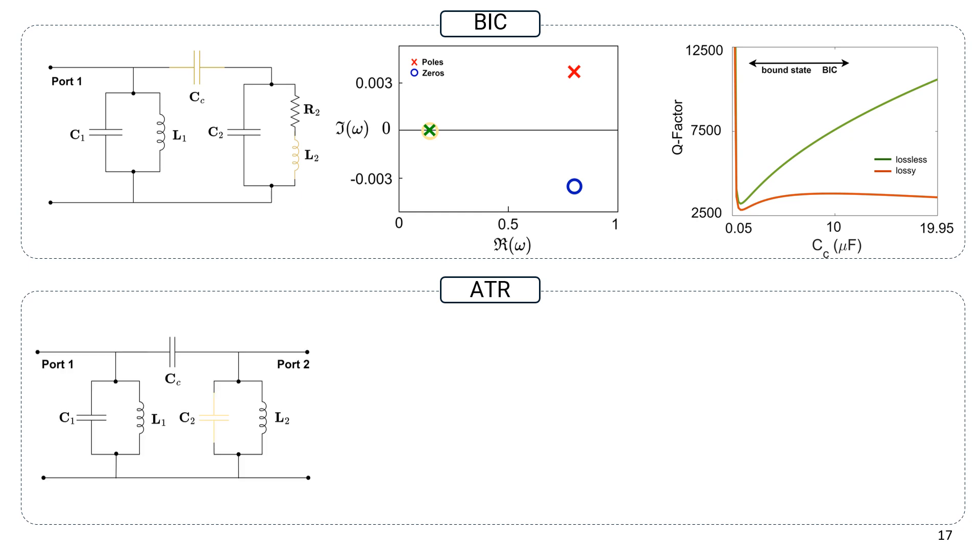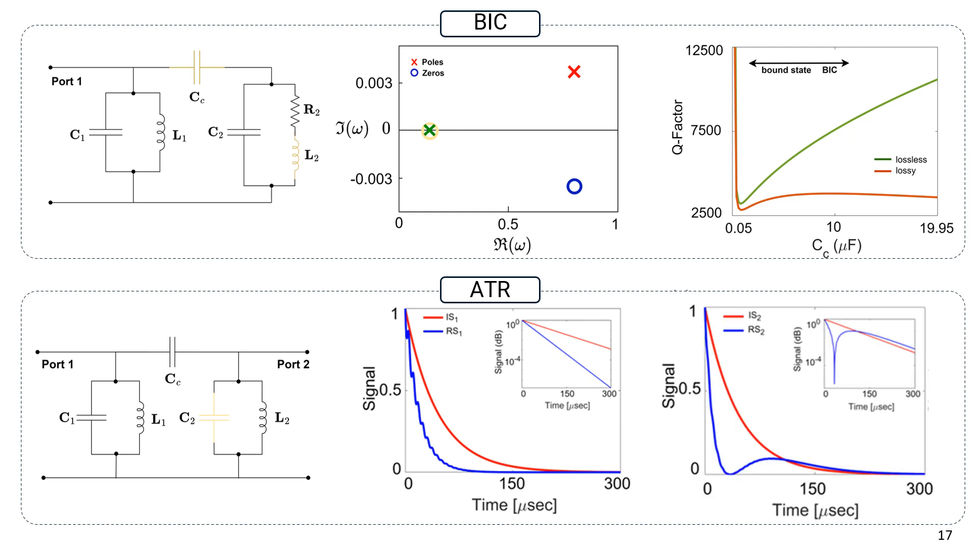Another example is an anisotropic transmission resonance, or ATR effect. In a two-port circuit with two resonators coupled by a capacitor, this effect occurs at the transition between weak and strong coupling. When exciting the system from port 1, the reflected signal diminishes significantly after the transient period, while the transmittance remains nearly full. However, when excited from port 2, the reflected signal remains nearly equal to the incident signal, demonstrating a strong directional dependence in the system's response.